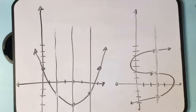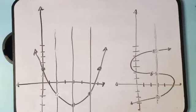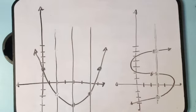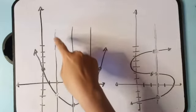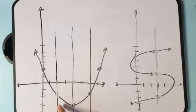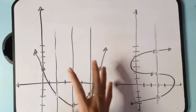Let's have an example using the vertical line test. We have two graphs here, and we will use the vertical line test to check whether the given graphs are functions or not. All we have to do is to draw a vertical line. If that vertical line crosses one point only, then the graph is a function. But if the vertical line passes two or more points from the graph, then the graph is not a function. As you can see here, the vertical line I drew passes through only one point each time we draw a line on this graph. Therefore, this graph is a function.